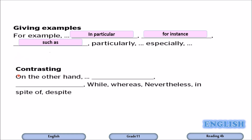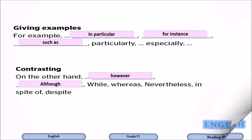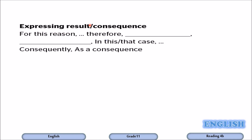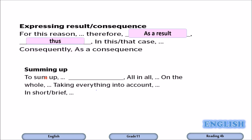For contrasting ideas, the writer used however and although. To express result or consequence, the writer used as a result and thus. For summing up or the conclusion, the writer used in conclusion.